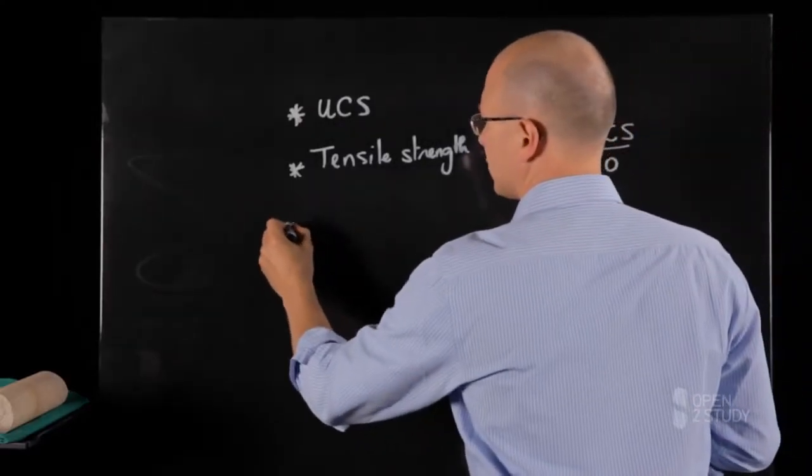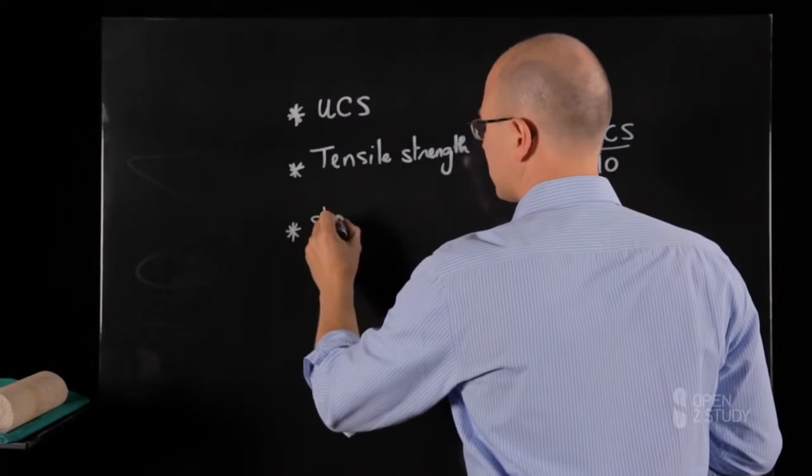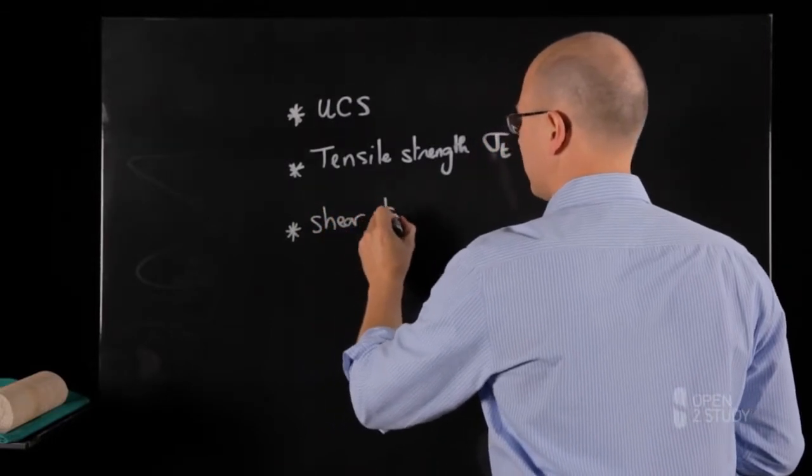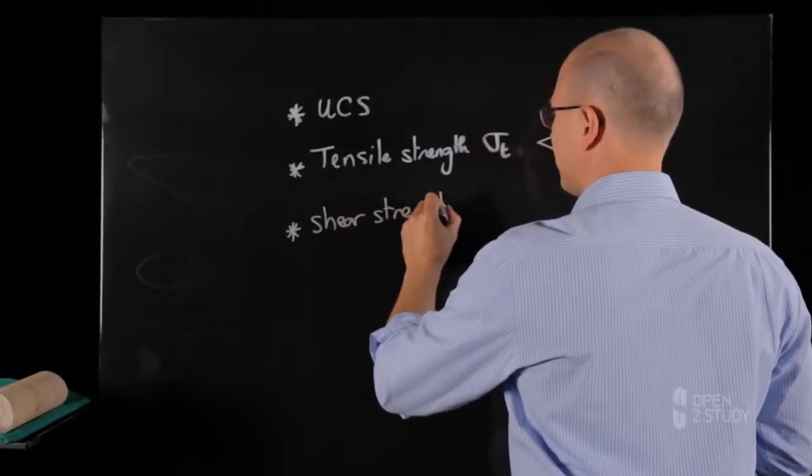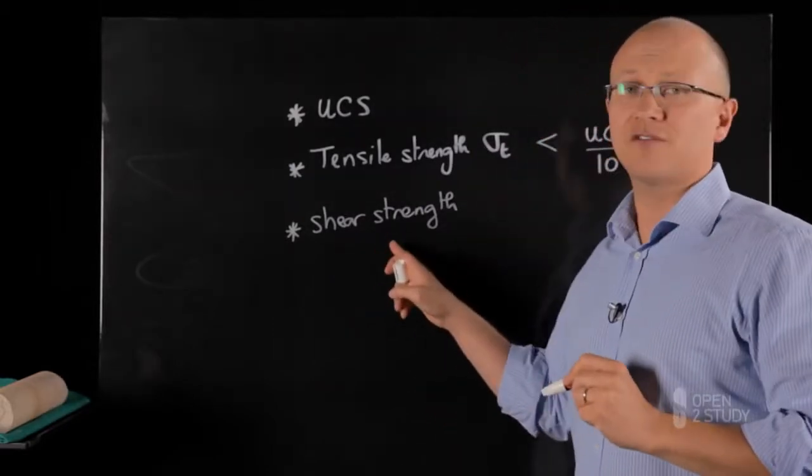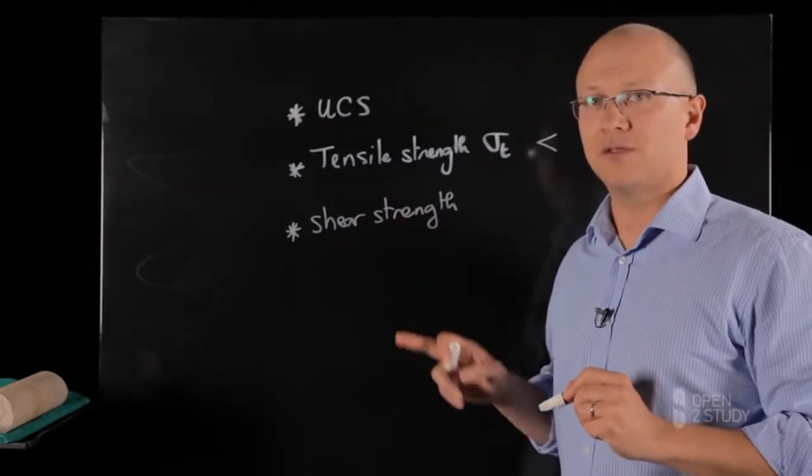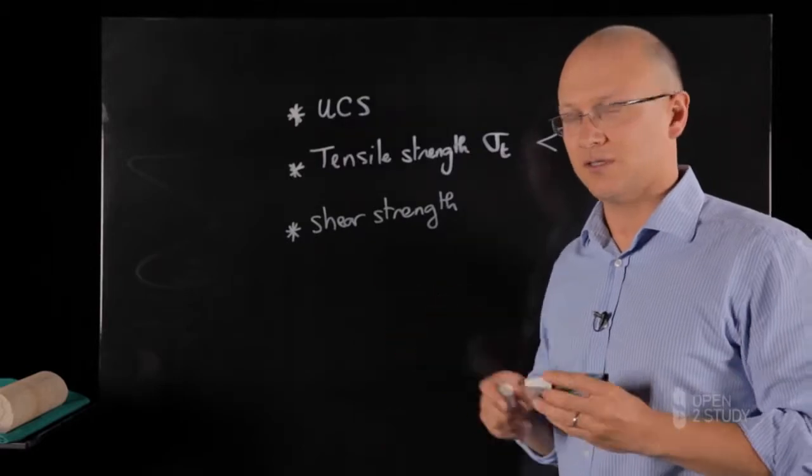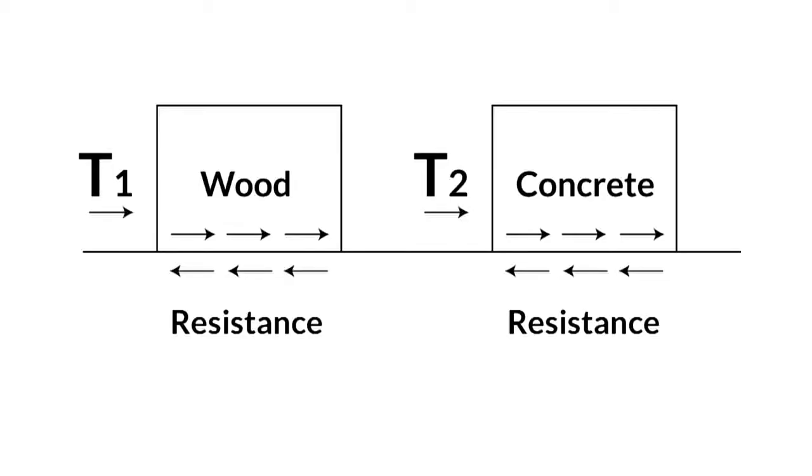And we also have this shear strength we've just mentioned in the previous picture. The thing is this shear strength is not a unique value and this can be illustrated using this coming picture. If you consider two blocks resting on a flat surface, one block made of wood, one block made of concrete, you would have more difficulty pushing and sliding the concrete block than the timber block because the concrete block is heavier than the timber block.